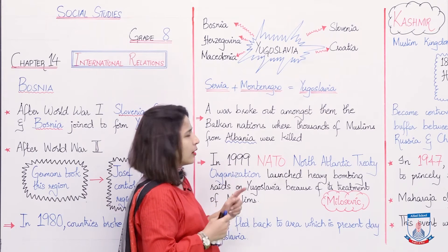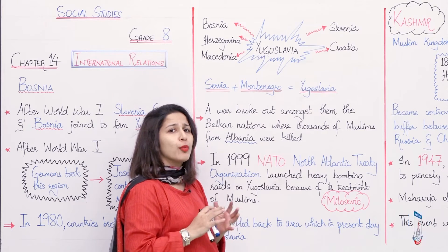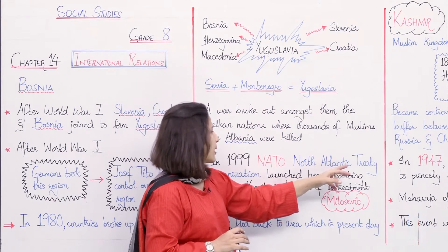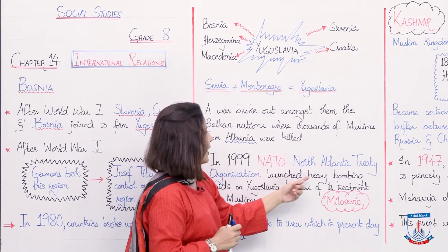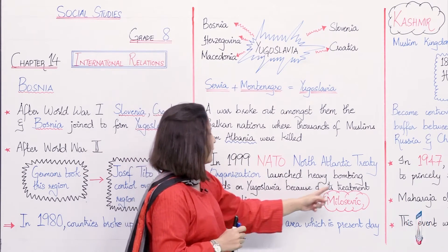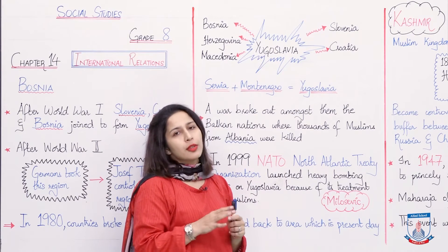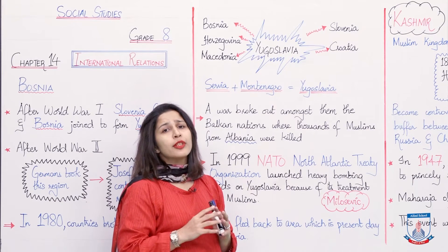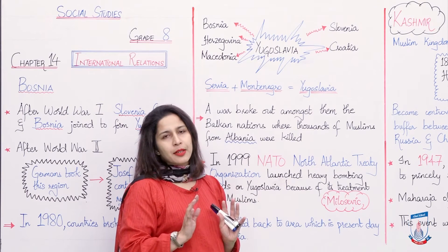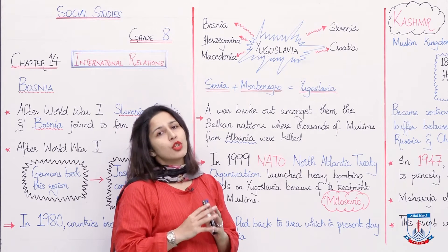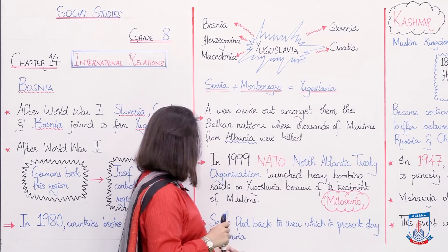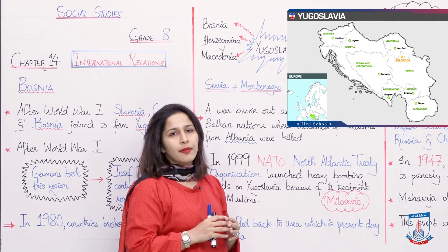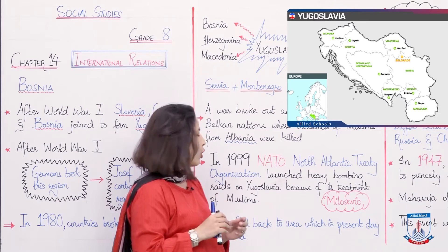Then in 1999, NATO launched heavy bombing raids on Yugoslavia because of its treatment of Muslims. During all these fights and massacres, most of the Muslims were killed. As a result, Serbs fled back to the area which is present-day Yugoslavia. This is the present condition of Yugoslavia, which took form after 1999.